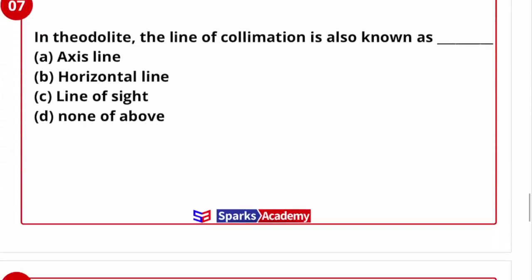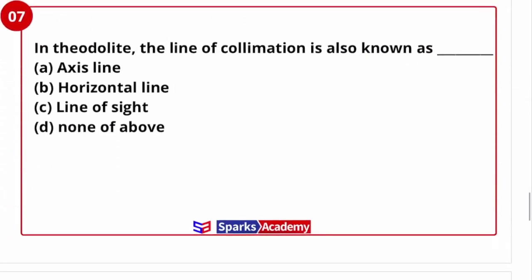Next question. In theodolite, the line of collimation is also known as, I am telling you, line of sight in this name is line of collimation. So the answer is option C, line of sight.